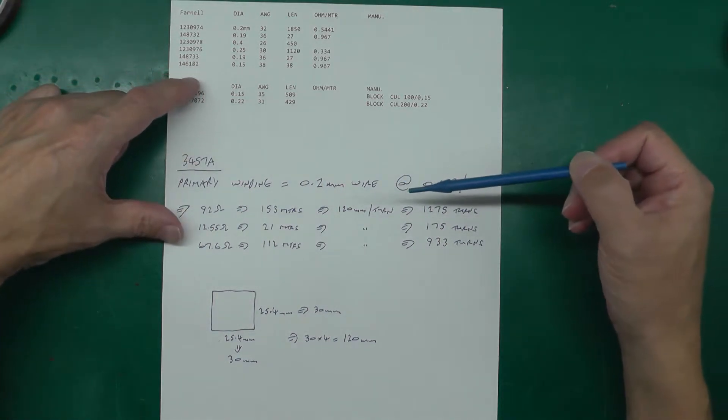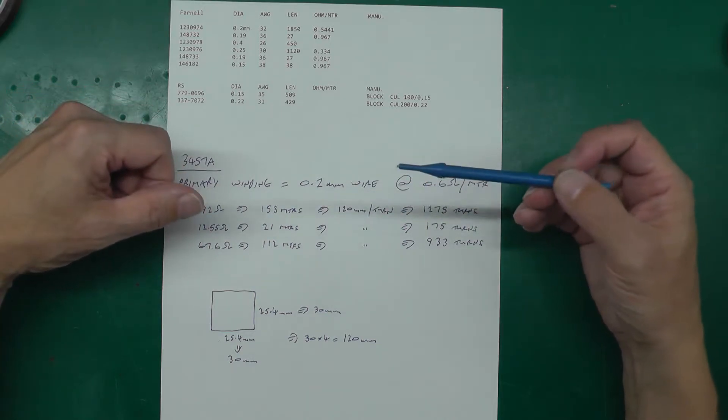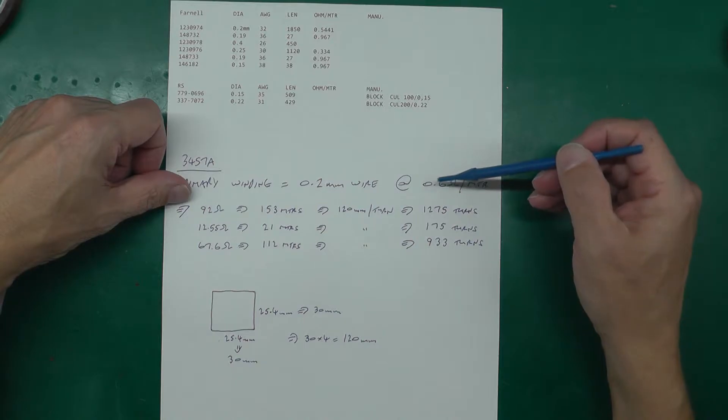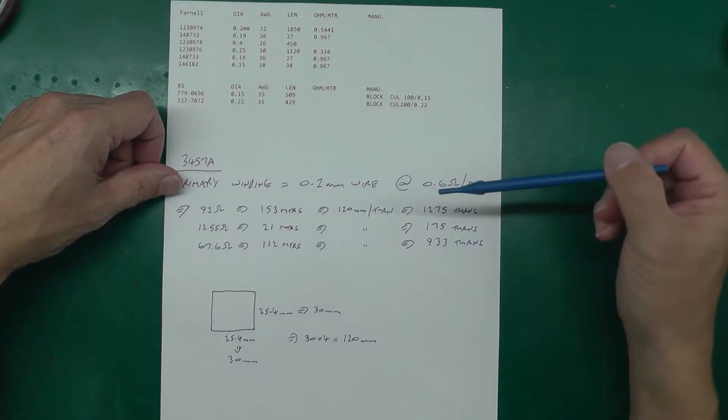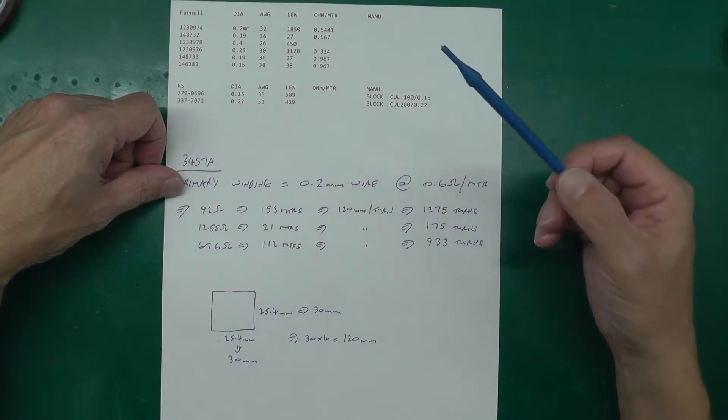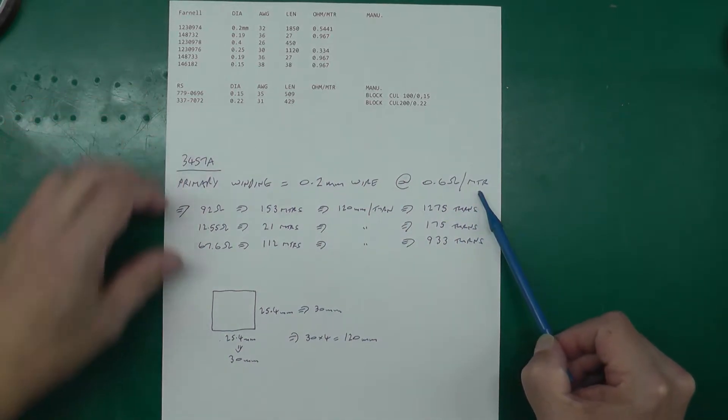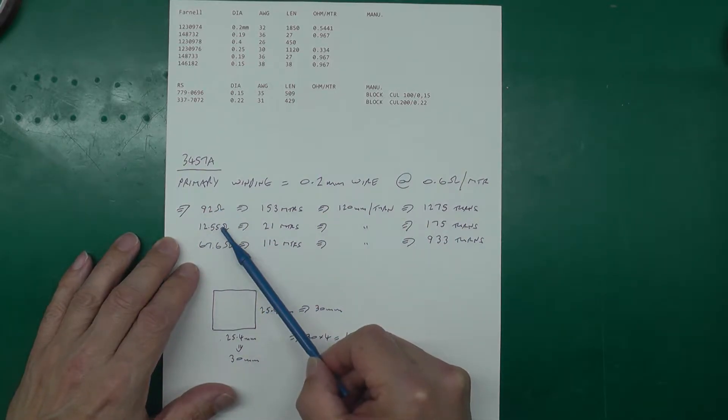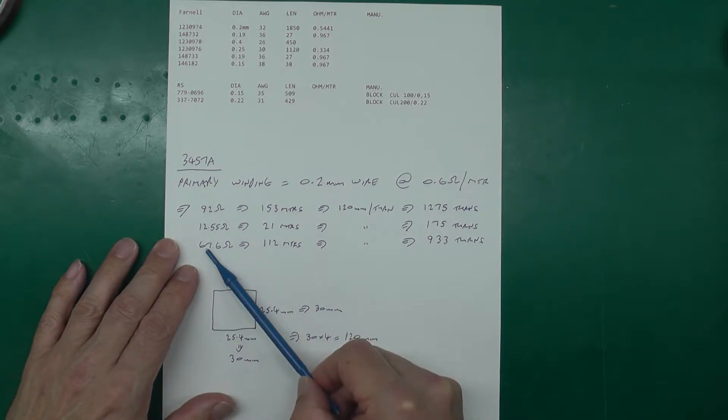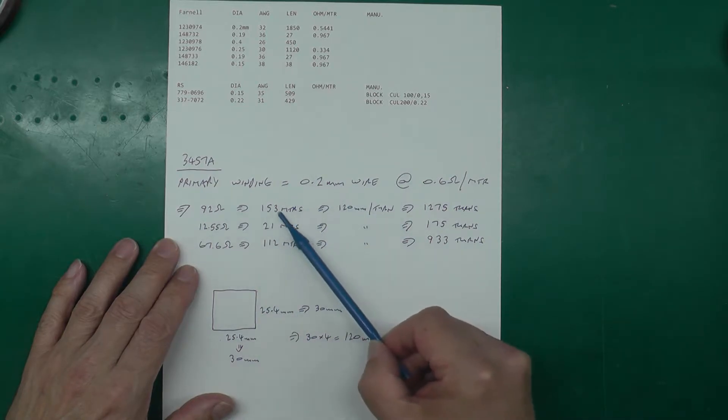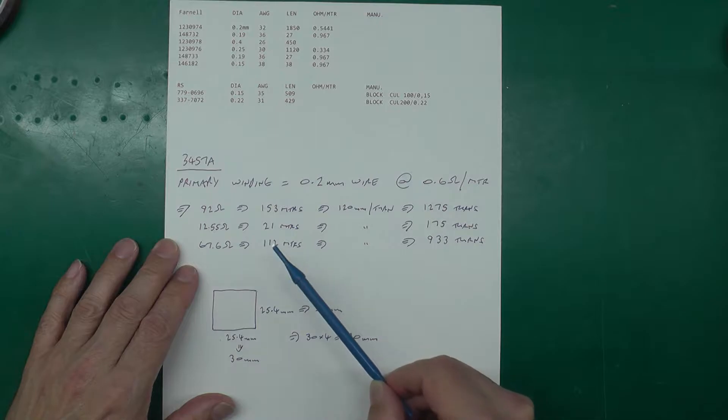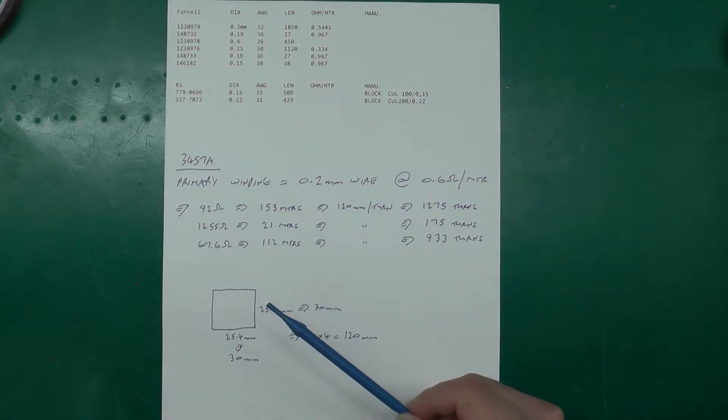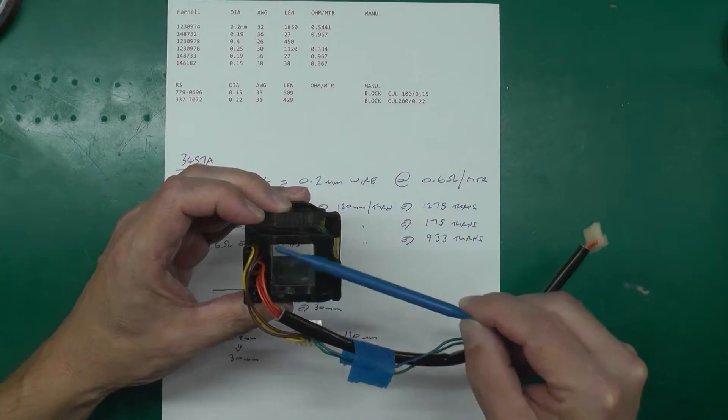Another thing is I need to know the resistance per meter. Well I took a one meter length of that wire there and it measures out just over 0.6 of an ohm per meter. That's important for me to work out how many turns were on the original bobbin. I worked out from the 0.6 of an ohm per meter and the fact that the three windings on the bobbin were 92 ohms, 12.55 and 67.6 ohms respectively, I've worked out that there were 153 meters, 21 meters and 112 meters length of wire per winding.